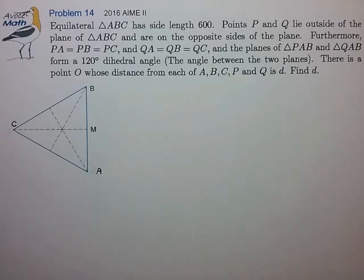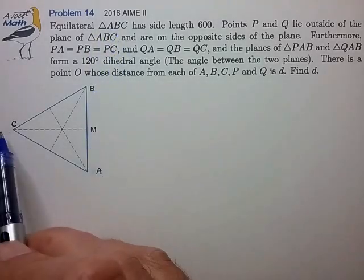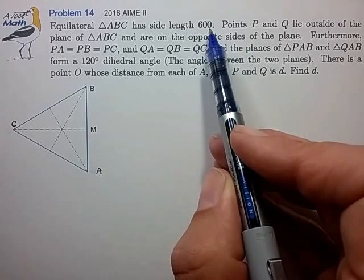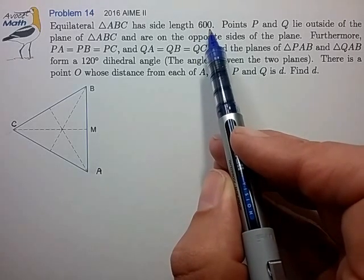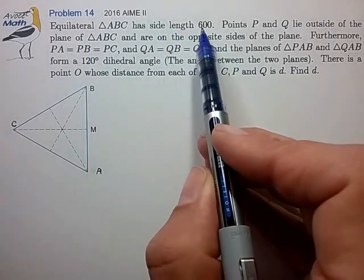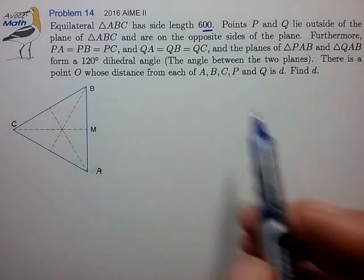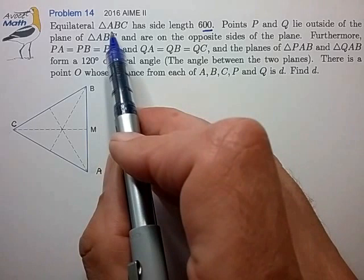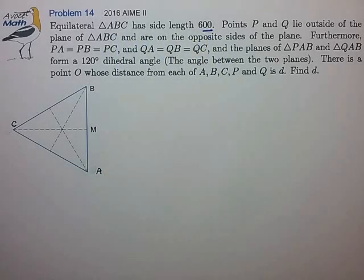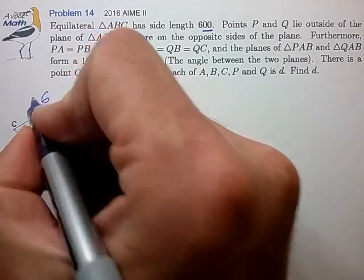So we have a solid geometry problem here that involves an equilateral triangle ABC that has a side length of 600, and I see right away an opportunity to simplify this problem a little bit. It looks like all these distances are going to scale with the side length, so there's really no need to carry around these two extra zeros. So let's just assume that triangle ABC has side length six, and we'll add these two zeros back at the very end.